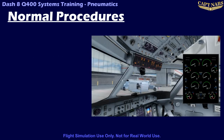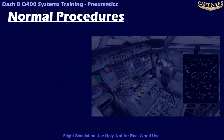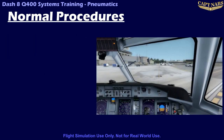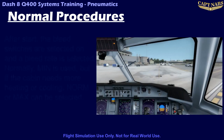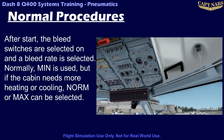Normal operation of the pneumatic system is very simple. The bleed switches should be selected off for engine starting and shutdown to ensure sufficient cooling air can pass through the engine and to prevent the possibility of fumes from within the engine entering the bleed system during the start when the engine is running below idle speeds. Once the engines have been successfully started, the bleed switches can be selected on, usually as part of the after-start flow, and the bleed selector is set to min unless a higher airflow is required to heat or cool the cabin quickly during a very hot or very cold day.